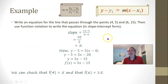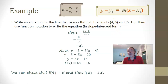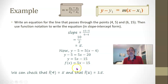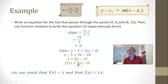To check, plug in the x-coordinate from either point and it should give you the matching y-coordinate. f of 4: 5 times 4 is 20, minus 15 is 5. And f of 6: 5 times 6 is 30, minus 15 is 15. Both points check out.